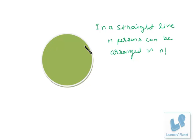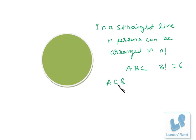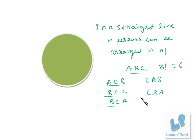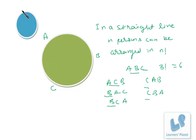Suppose we have three persons A, B, and C. If we make the linear arrangement of these three persons, there will be 3 factorial, or 6 ways: ABC, ACB, BAC, BCA, CAB, and CBA — all six arrangements are different from each other. But if we have to arrange these three people around a circle, what would happen? Here is one arrangement — A, B, and C — and the second arrangement would be A, B, and C on another circle.